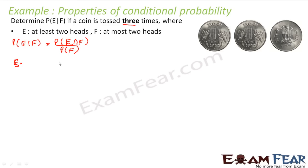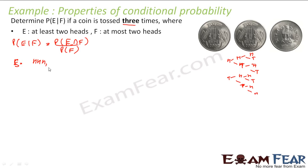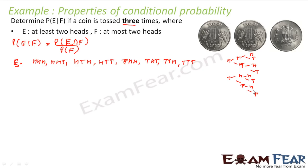Let me write the whole sample space first. When you toss three coins, each can be a head or a tail. This gives us: HHH, HHT, HTH, HTT, THH, THT, TTH, and TTT. This is my whole sample space.